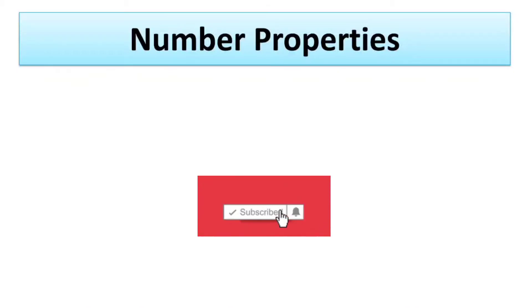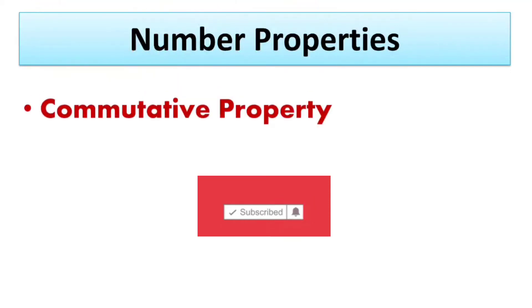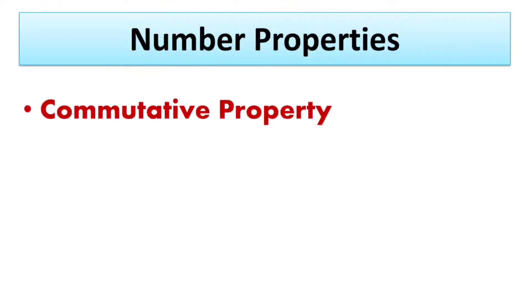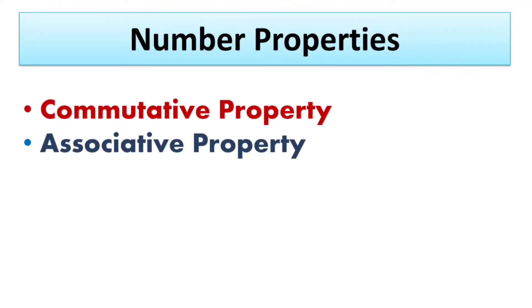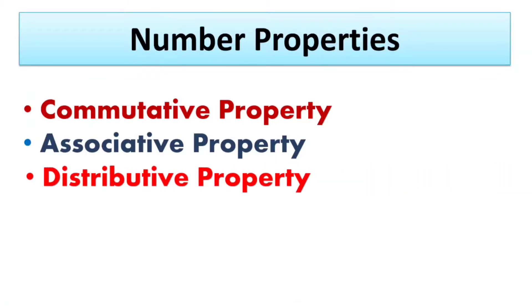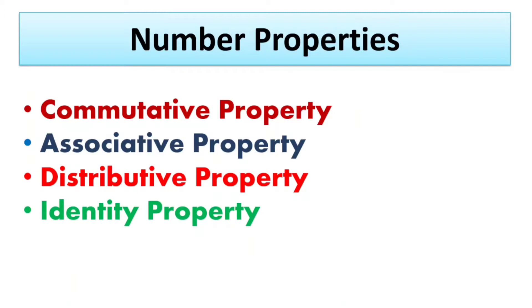Hello friends, this is Neelima. Welcome to NG Classes. Our today's topic is number properties. There are four basic properties of numbers. The first one is commutative property, second one is associative property, third one is distributive property, and fourth one is identity property. You should be familiar with each of these properties. So let's see one by one.